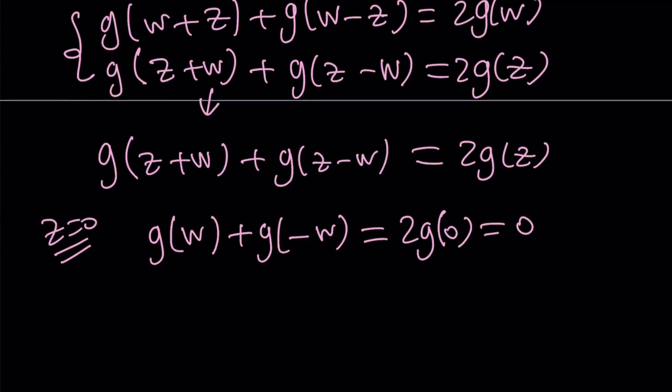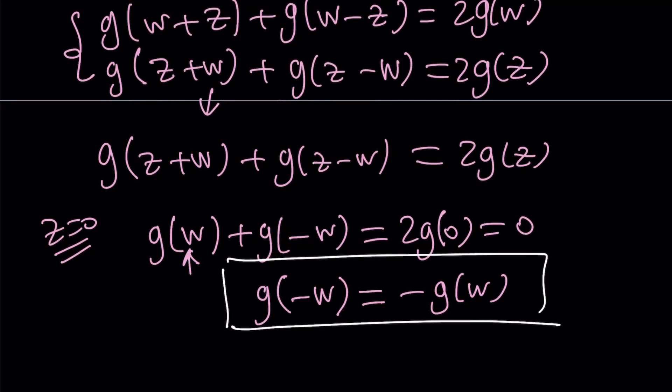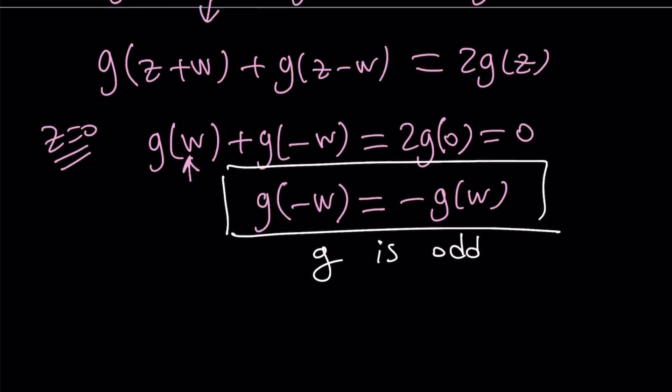Now this is powerful because if you isolate g(-w), you get -g(w) from here if you put this on the right hand side. And now this gives us a very important fact: that g is an odd function. So g is odd, and that shouldn't be odd, right? G is odd.